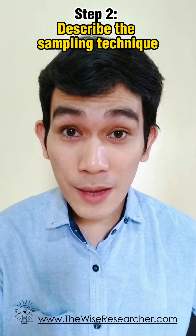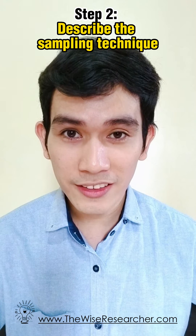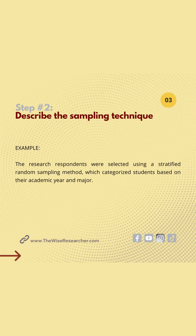Step number two: describe the sampling technique. For example, the research respondents were selected using a stratified random sampling method, which categorized students based on their academic year and major.